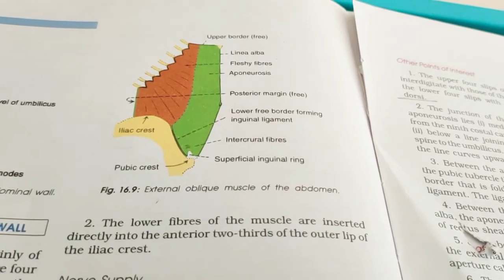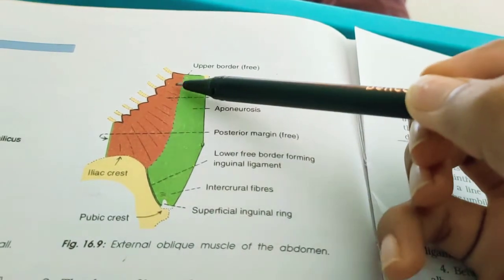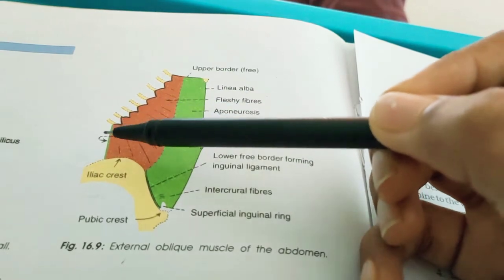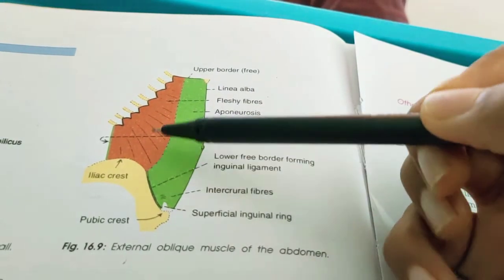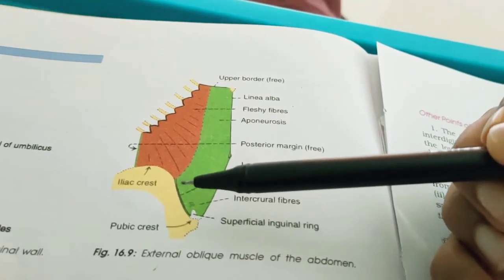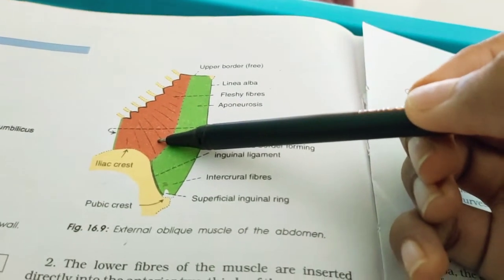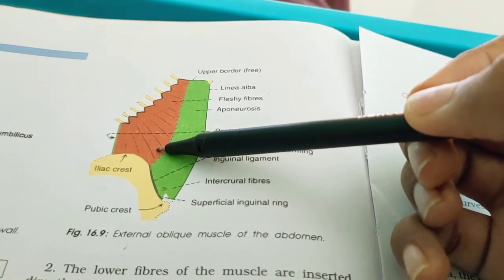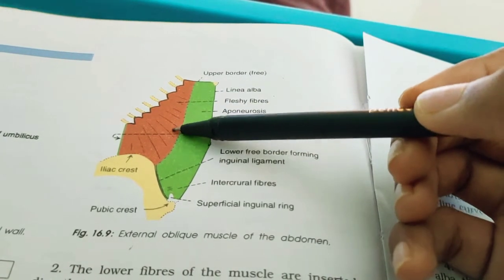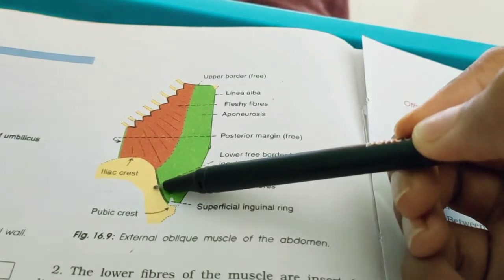First we will start with the external oblique muscle. This muscle mainly arises by eight fleshy slips from the middle of the shaft of the lower eight ribs, and the fibers run downwards, forwards, and medially. The insertion — most of these fibers form a broad aponeurosis, through which they are inserted from above downwards into the xiphoid process, then the linea alba, next the pubic symphysis below, and also into the pubic crest and pectineal line of pubis.